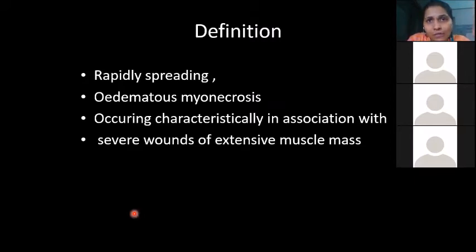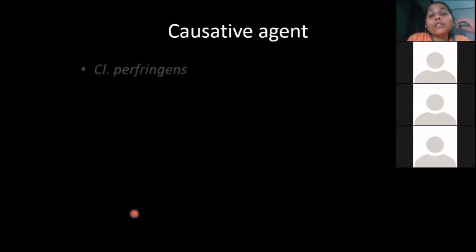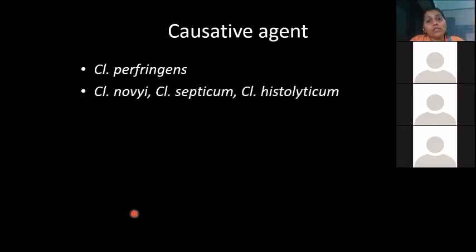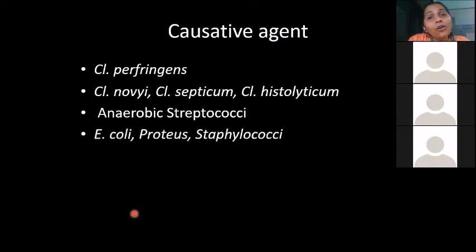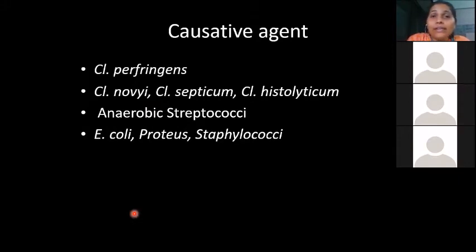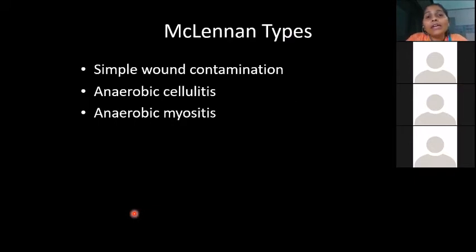Gas gangrene occurs characteristically in association with severe wounds involving extensive muscle mass. The causative agents include Clostridium perfringens as the most common cause, followed by other Clostridium species — C. novyi, C. septicum, C. histolyticum — then anaerobic streptococci, and facultative anaerobes like E. coli, Proteus, and Staphylococci.